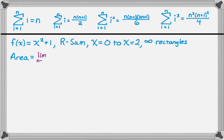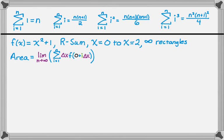This is just a lot of writing. The area is the limit as n approaches infinity of the sum from 1 to n of delta x times f of 0 plus i delta x. So 0 plus i delta x is what I call an evaluation point. Since f of x is x squared plus 1, I'm going to evaluate it at i delta x, so from 1 to n: delta x times the quantity i delta x squared, plus 1.